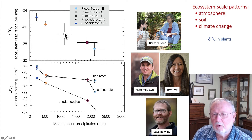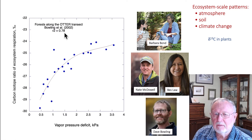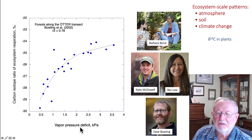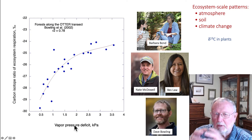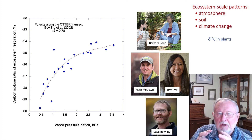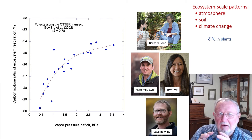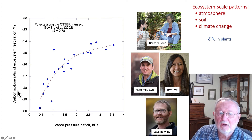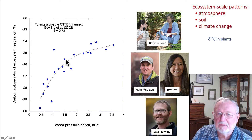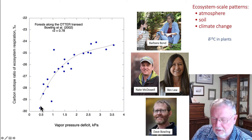The question was: what's driving this variation? It turns out that it's vapor pressure deficit — that over a period of a couple of days, stomates will open and close depending on the humidity in the air. And as the stomates opened and closed, that changed the carbon isotope ratio of ecosystem respiration. So ecosystems tend to be very dynamic, having short-term responses with respect to VPD and long-term responses with respect to soil water deficit.